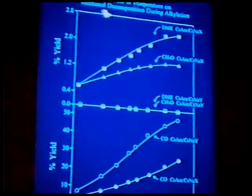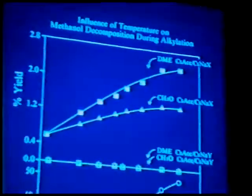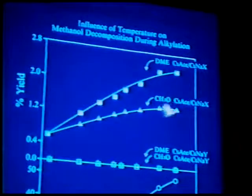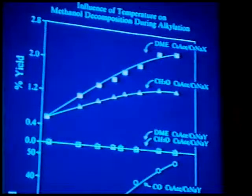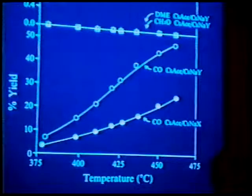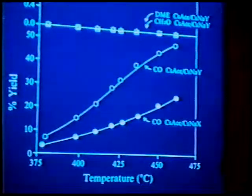One possible explanation is if we monitor the influence of temperature on methanol decomposition during alkylation. Looking at the top graph — yields as a function of temperature from 380 to 480°C during alkylation — with our X material we observe formaldehyde in the product stream, consistent with the proposed mechanism. However, for the Y material, there's no formaldehyde in the product stream. Inversely, we see high CO formation in the product stream of the Y compared to the X. So it appears we have a problem with stability of formaldehyde. This is consistent with previous work involving impregnation of boric acid trying to promote stability of formaldehyde. For our catalyst, the formaldehyde seems to be the weakest link under these more basic conditions.